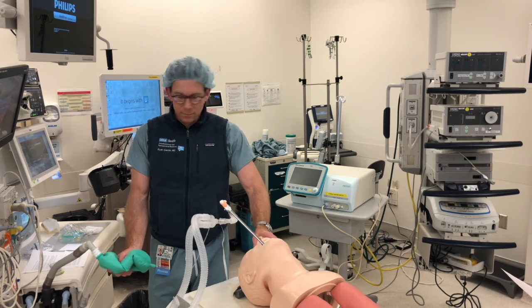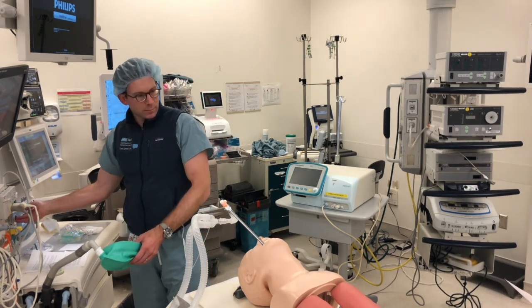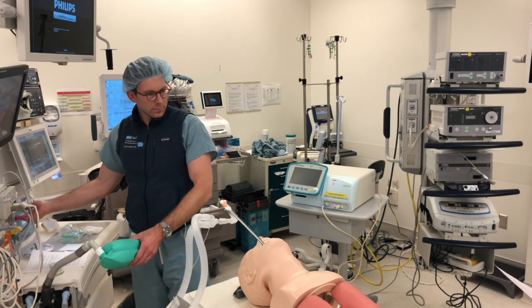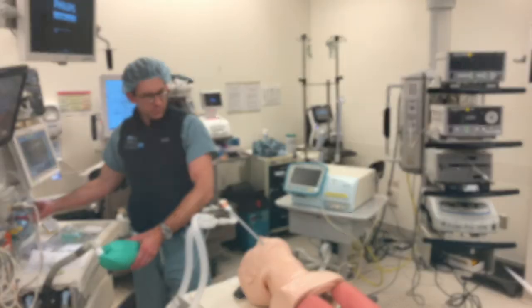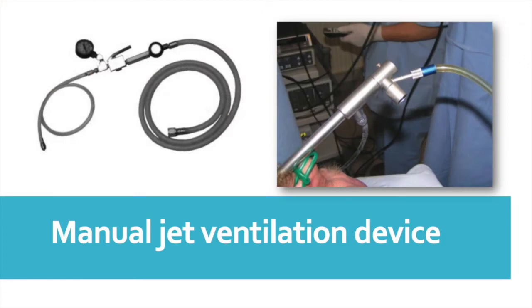If muscle relaxation is required, you can use the oxygen flush as a way to deliver oxygen at high flow. This is a manual jet ventilation setup, which may be all you have in some hospitals. It has a trigger just like a bicycle or automobile tire pump — you press it with your thumb to deliver a jet of air. They're difficult to control with any degree of precision and can easily lead to barotrauma, breath stacking, or even a tension pneumothorax — which could obviously be a devastating complication in patients with poor pulmonary reserve.